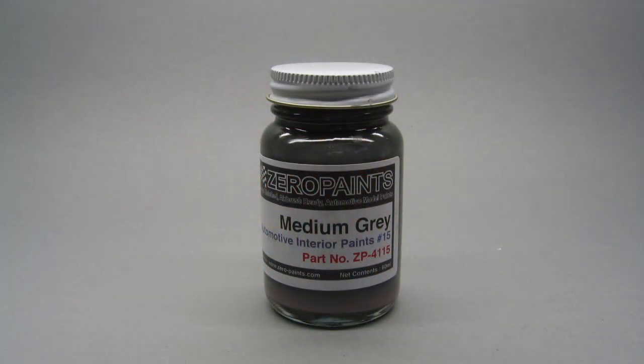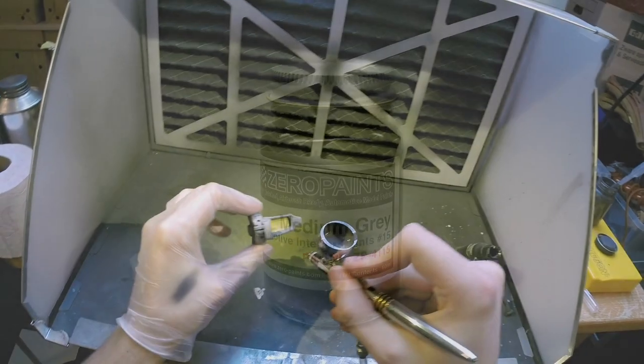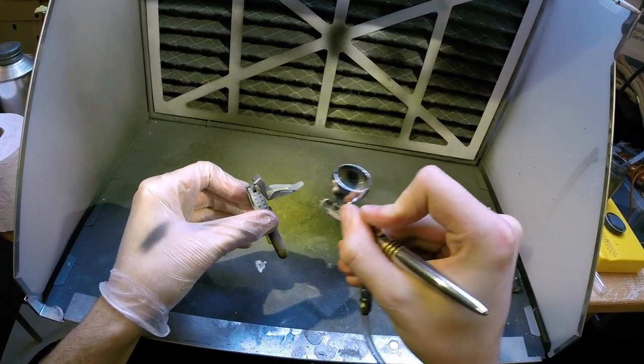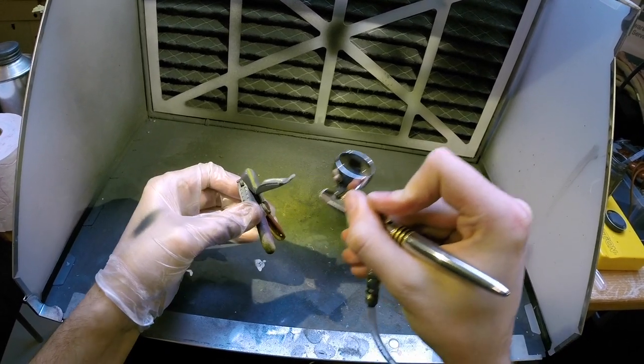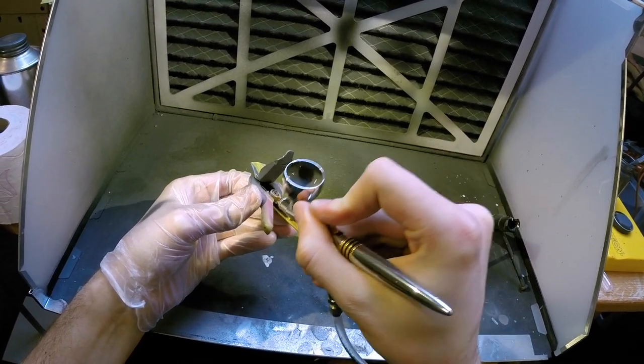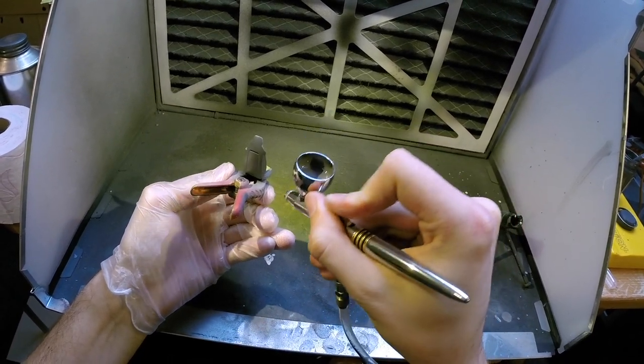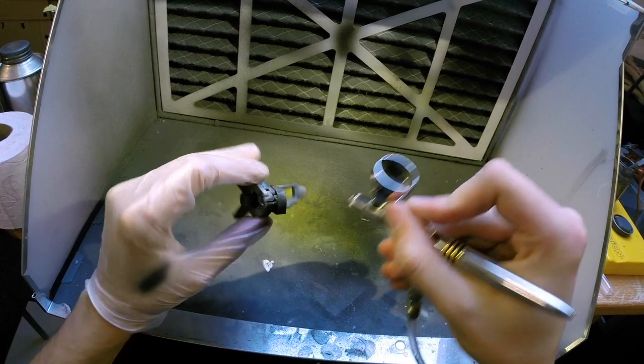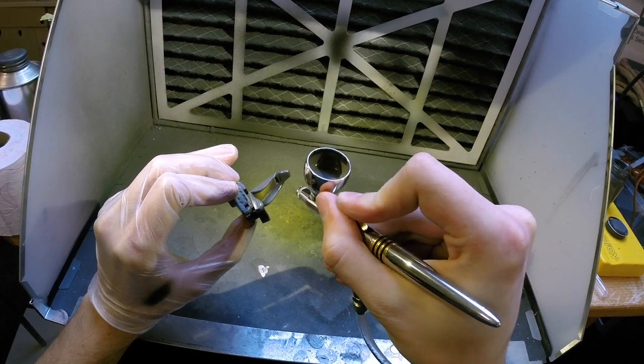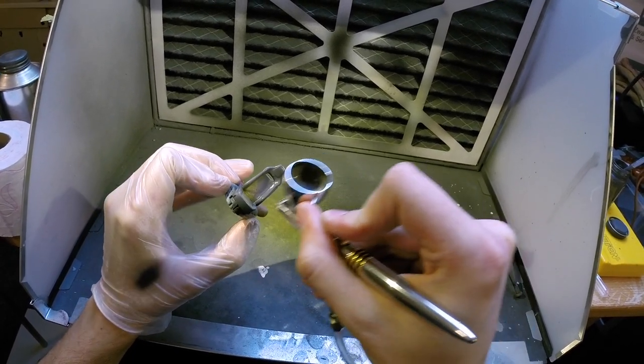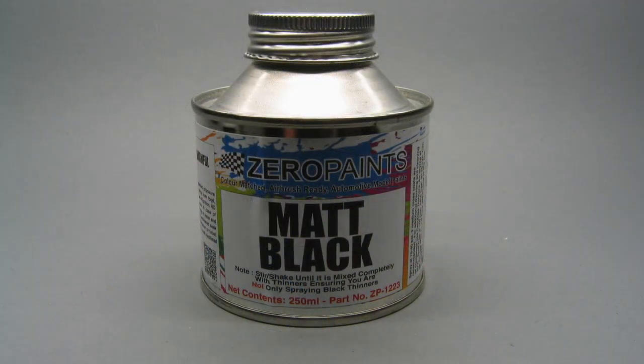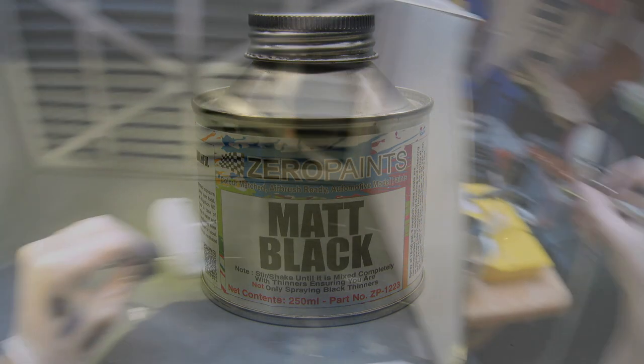With the inserts now masked off, I could paint the secondary color, medium gray, also from the Zero Paints interior color range. I applied two light coats waiting five minutes in between coats and then moved on to painting some other parts flat black.